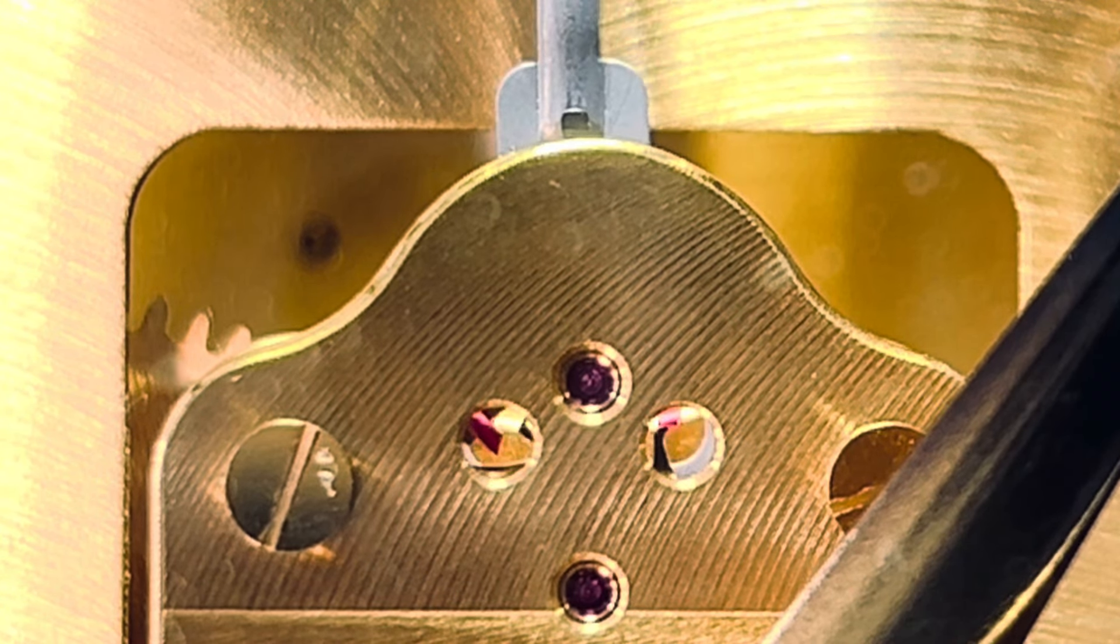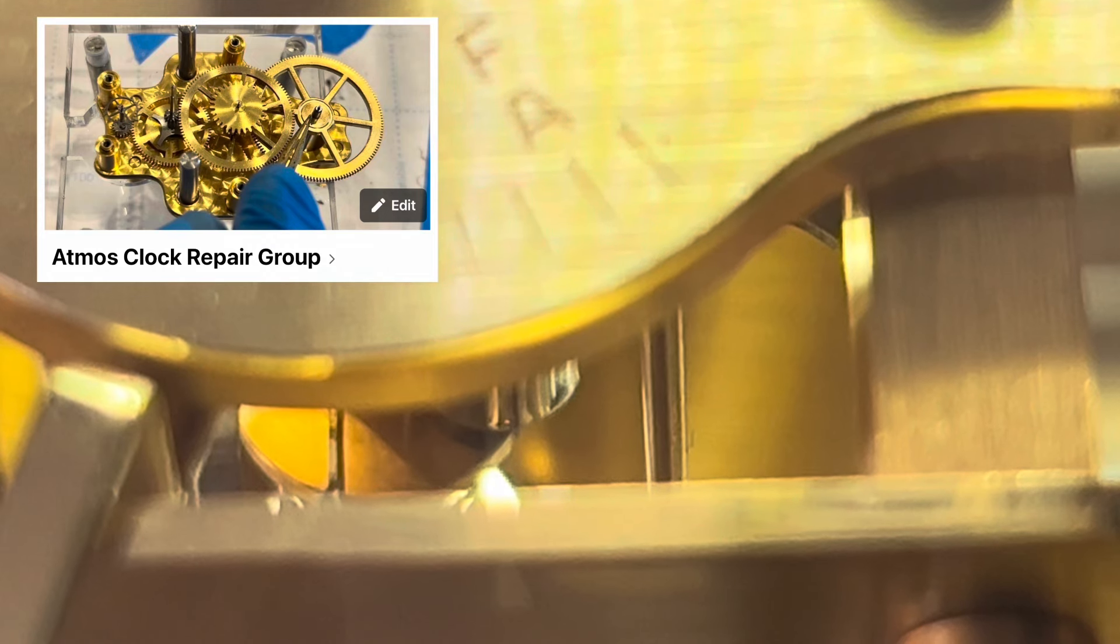This is going to be a top view. I just want you to watch how the impulse roller gets captured, gets just nudged, and it's allowed to escape. Really important, no dragging. You want to capture that impulse roller. It needs to set the fork up for its next movement, and then it has to get pushed.